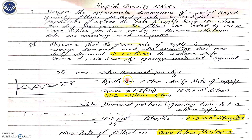So this is the problem. What it states is: you have to design the approximate dimensions of a set of rapid gravity filters for treated water required for a population of 50,000. The rate of supply is 180 liters per day per capita.